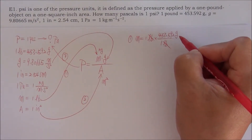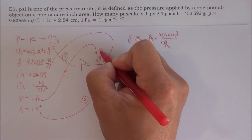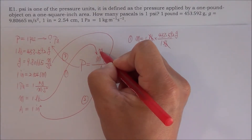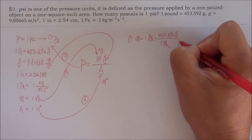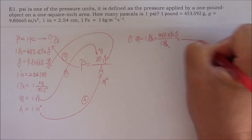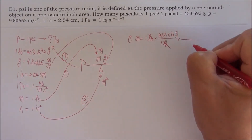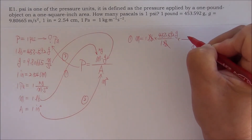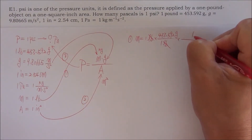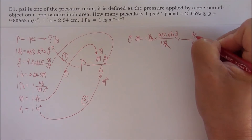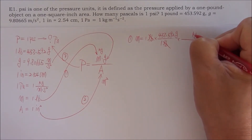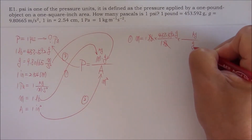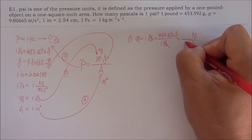Remember, 'kilo' means 10 to the positive 3. We can get two conversion factors. We want to cancel grams, so grams should be in the denominator. We want to get kilograms, so kilograms should be on top — in the numerator. The bottom is called the denominator. Kilo means 10 to the third.